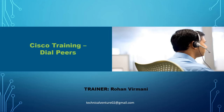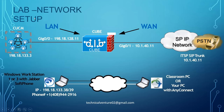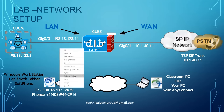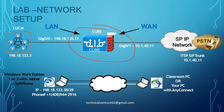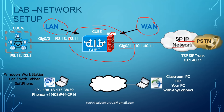Let's start with what dial peers are, their types, and how to configure them. This is the lab network setup. You can see we have two ports on the CUBE: Gig0/0 and Gig0/1. Gig0/0 is connected to the internal network. Gig0/1 is connected to the external network, which is the service provider IP network — that's why we call it the WAN. The CUCM is connected on the LAN interface with a trunk to the CUBE.